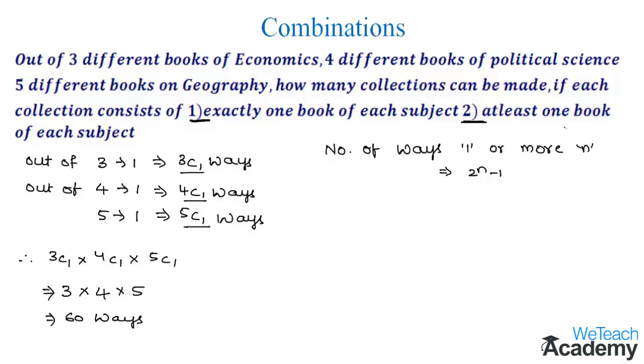Here we have to choose at least one book of each subject. That is, we can select one book out of three different books in 2^3 - 1 ways. Similarly, out of four different political books, we can select one book in 2^4 - 1 ways.